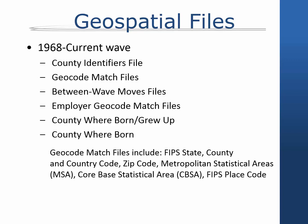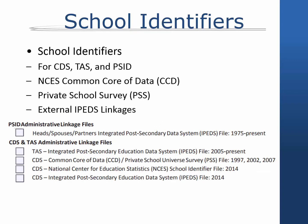The county where born or grew up geospatial files includes county level data about where PSID individuals and their parents grew up. The county child born file includes county level data about where children to PSID individuals were born, which has been asked since 1997. Restricted files with school identifiers are available for main PSID, the child development supplement, and the transition into adulthood supplement.